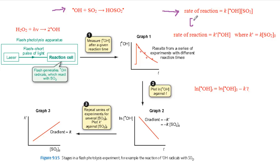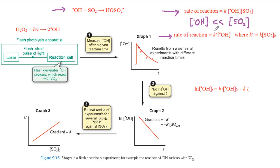The experimental conditions are arranged so that the concentration of hydroxyl radicals is very much less than the concentration of SO₂. This means that SO₂ is in huge excess and its concentration is effectively constant during the reaction and is equal to its initial value. Under these conditions, the reaction shows pseudo-first-order kinetics and the rate of reaction equals k′ times the concentration of hydroxyl radicals, where k′ equals k, the second-order rate constant, times the initial concentration of SO₂.